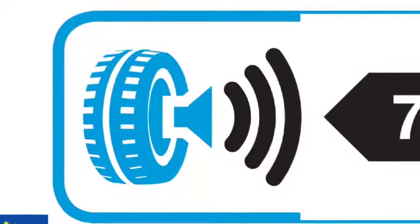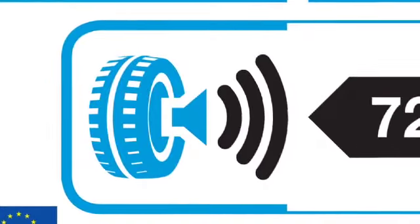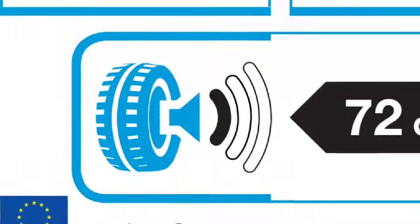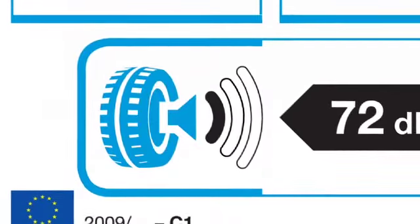Three black waves indicates the tyre produces the highest amount of noise. One black wave indicates the tyre emits the lowest level of noise.